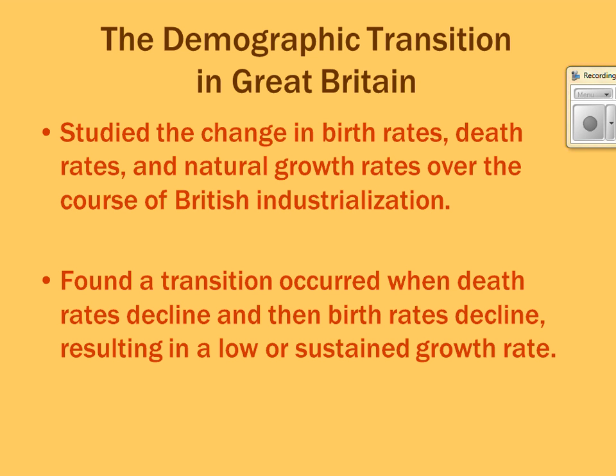One of the big models in the population chapter is the DTM, or demographic transition model. It started by looking at data in Great Britain — specifically church records, which tracked baptisms and funerals to get birth rates and death rates. We can apply the DTM to every country in the world, though it was first developed based on Great Britain.